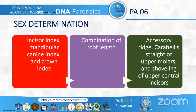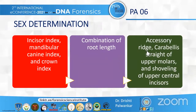In sex determination, different kinds of teeth are present in the oral cavity, and in males and females the shape and structure of the teeth differ. In males, teeth have a more masculine appearance with sharper incisal edges, whereas in females teeth appear more feminine with rounded edges. The incisal index, mandibular canine index, crown index, and occlusal index can be used. Root length, accessory ridges, and variations in tooth shape — such as accessory ridges on upper molars and shoveling of upper central incisors — can also help identify a particular individual.